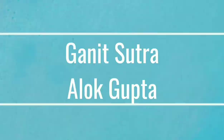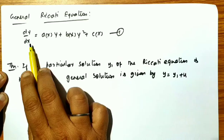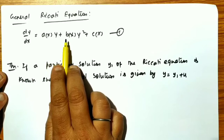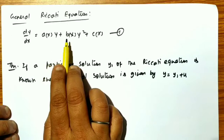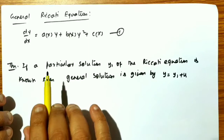Let's talk about the general Riccati equation. An equation of the form — a differential equation of the form dy/dx equal to a(x)y plus b(x)y² plus c(x) — where a(x), b(x), and c(x) are continuous functions of x. They can be constant or variable; there is no problem with that.